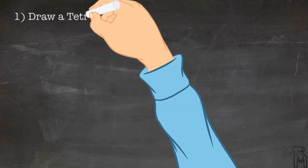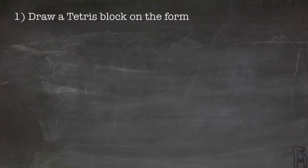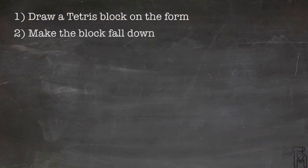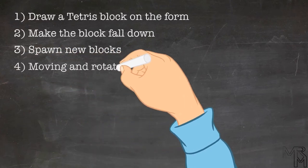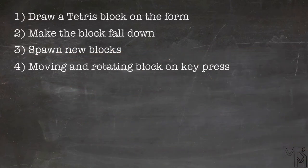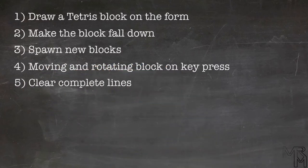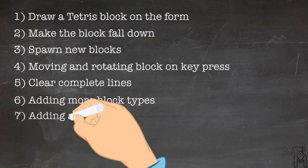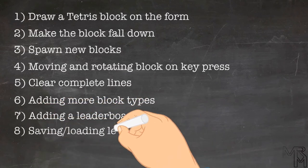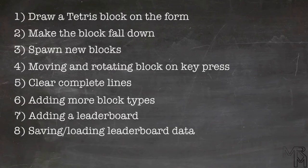This tutorial consists of 9 steps. First we'll have the program draw a Tetris block on the form. Then we'll have that block fall down, and have the program spawn a new block when the current one hits the ground. After that we'll make our program move and rotate the falling block when we press a keyboard key. We'll also make sure our game has all standard Tetris block types, and a leaderboard whose data is properly saved. Finally, we'll add sounds to make our game a bit more playable.